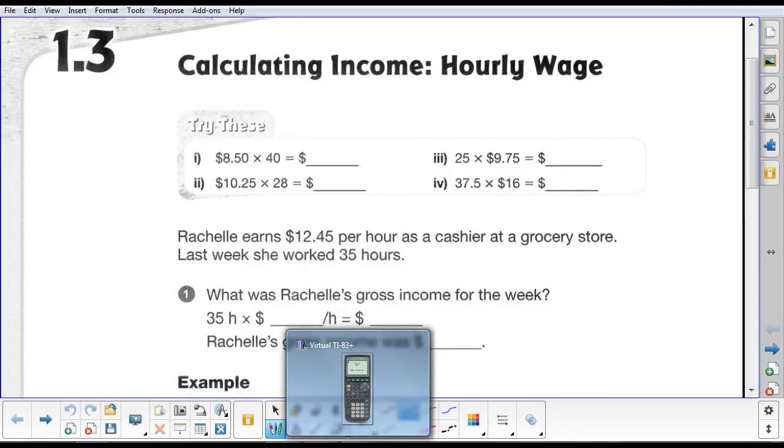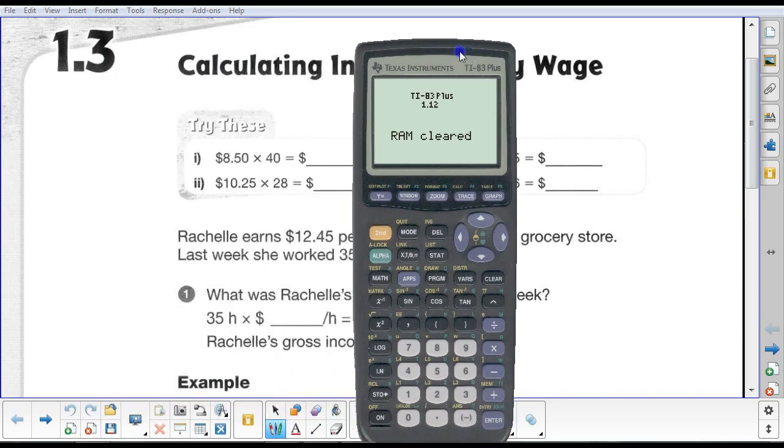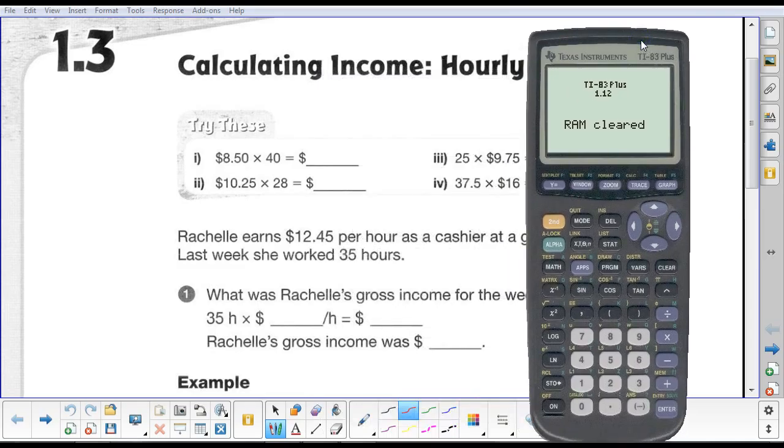We have $8.50 times 40. We could probably assume that this is somebody's hourly wage of $8.50 per hour multiplied by 40, which could probably be assumed to be 40 hours per week. So why don't we take our calculator out? Let's just take $8.50 and multiply that by 40 hours per week, and we end up with an answer of $340. So we can say this is $340.